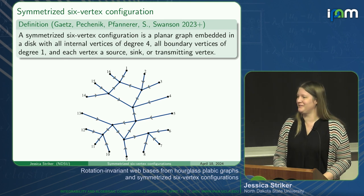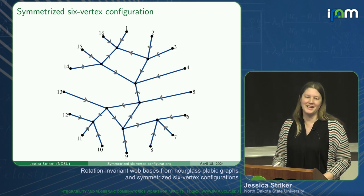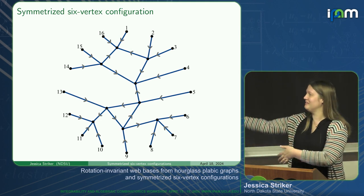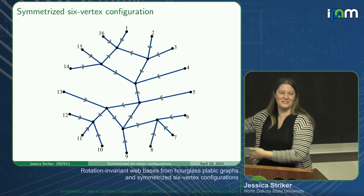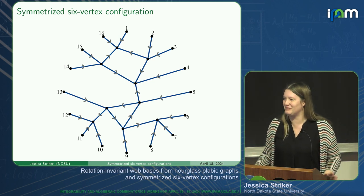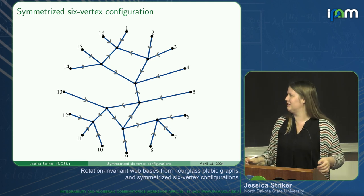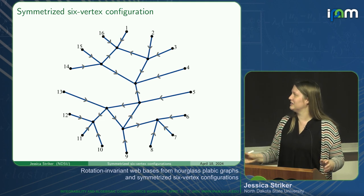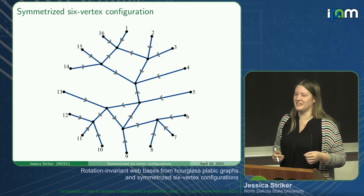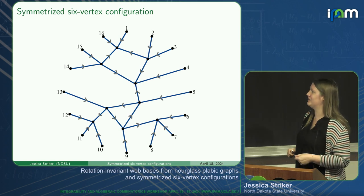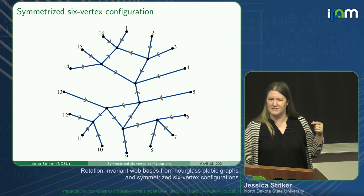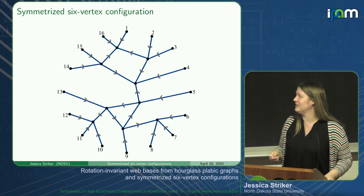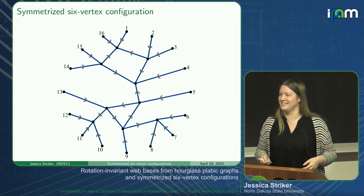So why did we define this model? It was not to do any of the typical six-vertex stuff. I invite you to do six-vertex model techniques on this model—I would love to know if there are good formulas for the partition function, interesting asymptotics, or whatever you know how to do to six-vertex models. I would be interested to know if it ends up being basically the same as the regular six-vertex model or if you see something new.